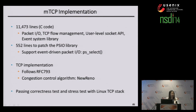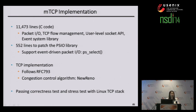We implemented MTCP with 12,000 lines of C code, which includes packet IO, TCP flow management, user-level socket API, and event system library. We also modify and add 550 lines to the PSIO library to support event-driven packet IO. Our TCP implementation follows RFC 793 and uses the new Linux congestion control algorithm. Our stack has passed heavy conformance testing with the Linux stack and also passed our own stress tests.